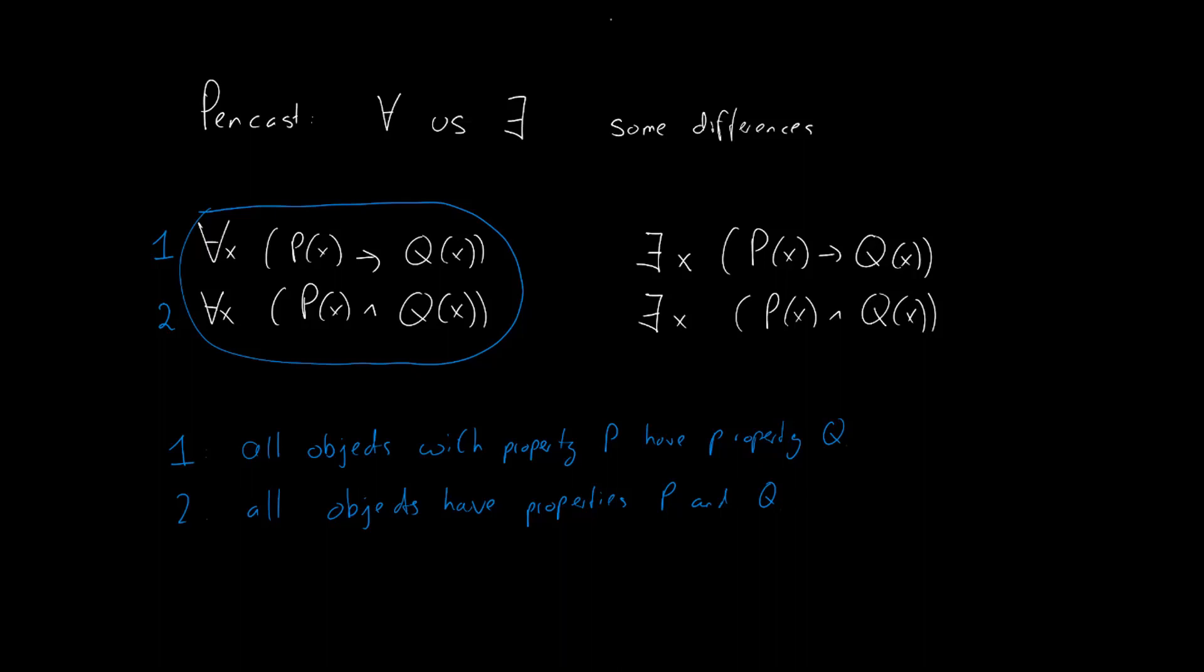For the first statement, it's entirely possible that there is an object, let's call it a, which has the property Q, but not the property P. Remember that an implication is also true if the antecedent, in this case P(x), is false.